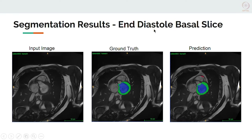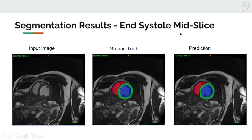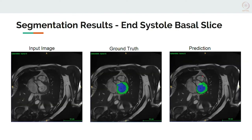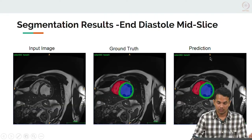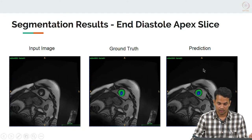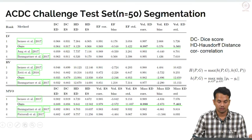One of the challenges in cardiac segmentation is the segmentation at the topmost and bottommost slices of the heart — mainly the basal slice, which is close to the arteries, and the apical slice, which is close to the end of the heart. These are very difficult regions to segment, and we can see here these are mispredictions. Our model does very well in predicting the mid-slice region of the heart, but when it comes to apex slices, because of the small region, it is quite ambiguous to clearly demarcate the apical sections.